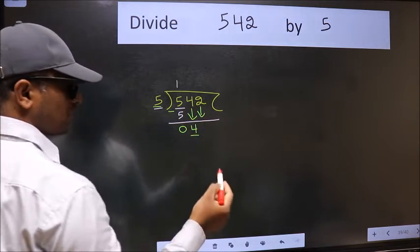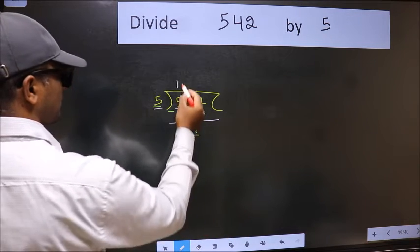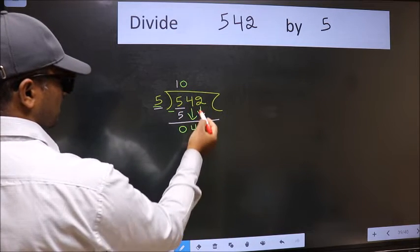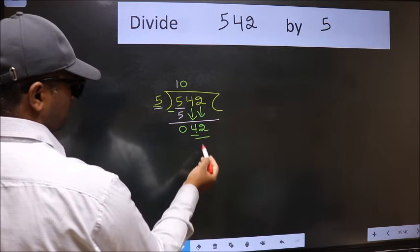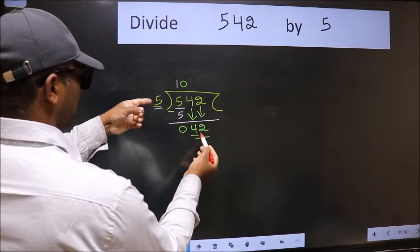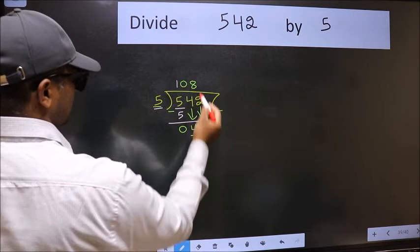And the rule to bring down the second number is we should put 0 here. Then only we can bring this number down. Now, 42. A number close to 42 in the 5 table is 5, 8, 40.